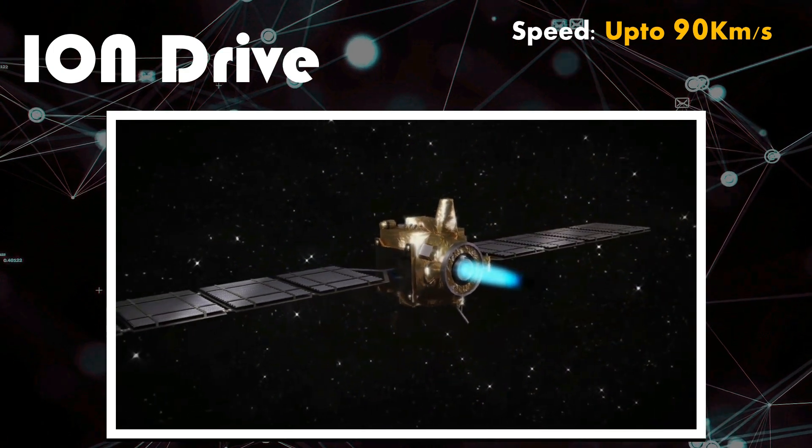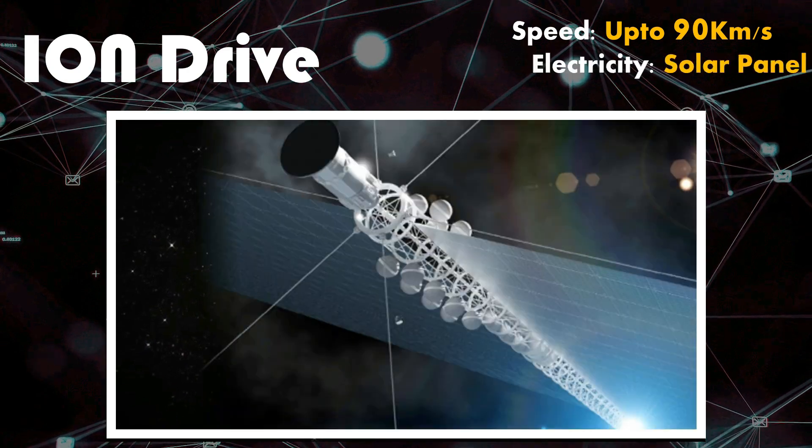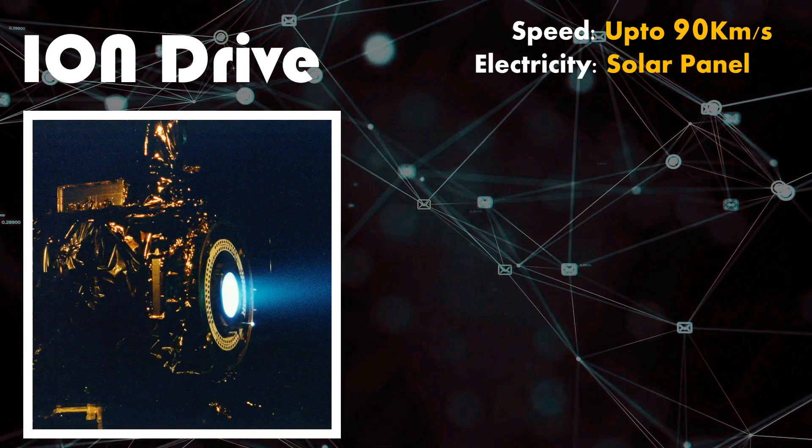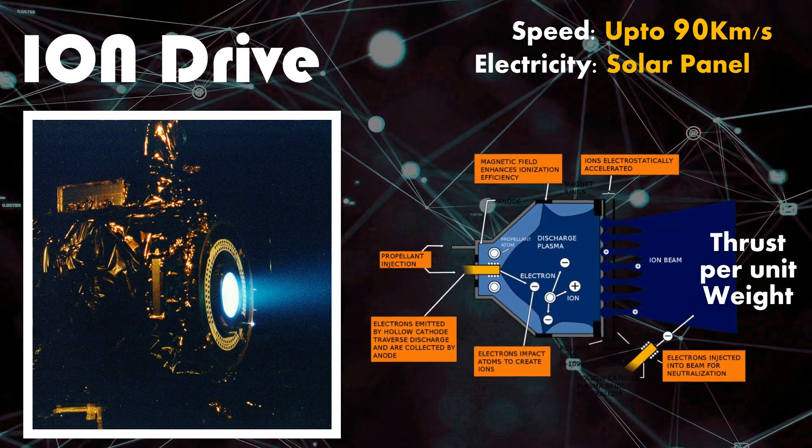At speeds of up to 90 kilometers per second, the electricity requirements can be met with solar panels, making it a 90% efficient drive. But the current technology of ion drives produces very little thrust per unit of weight.